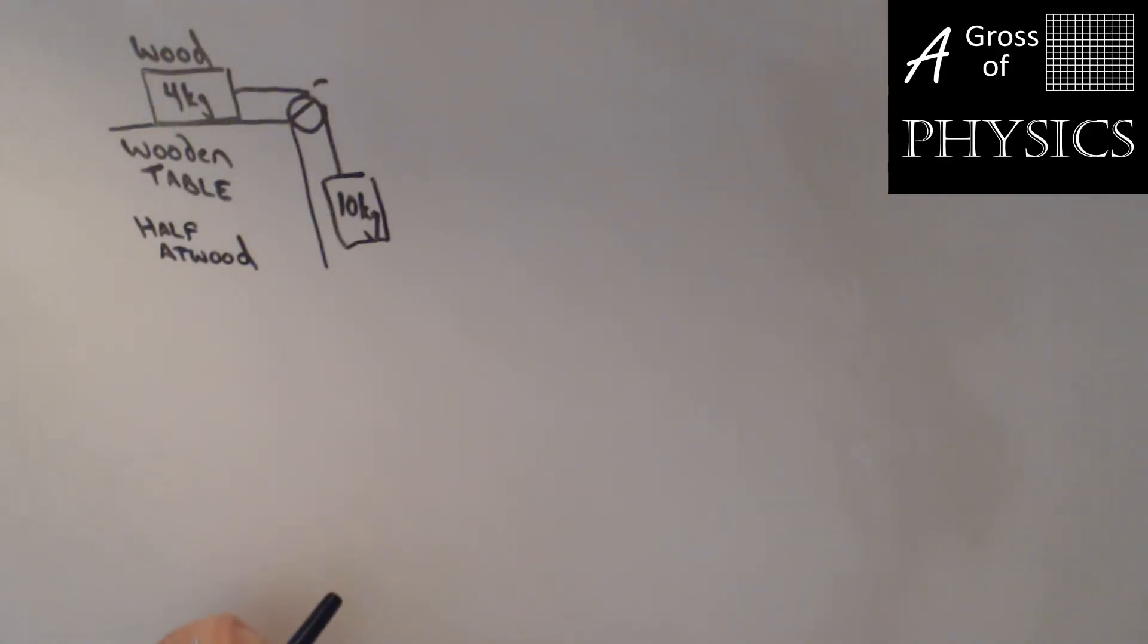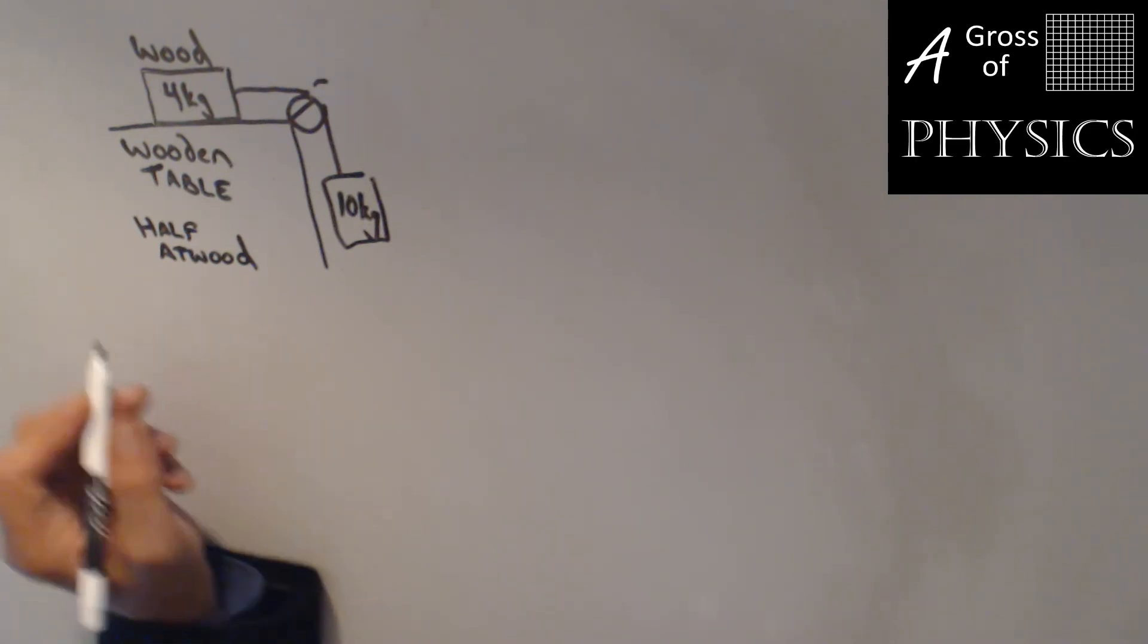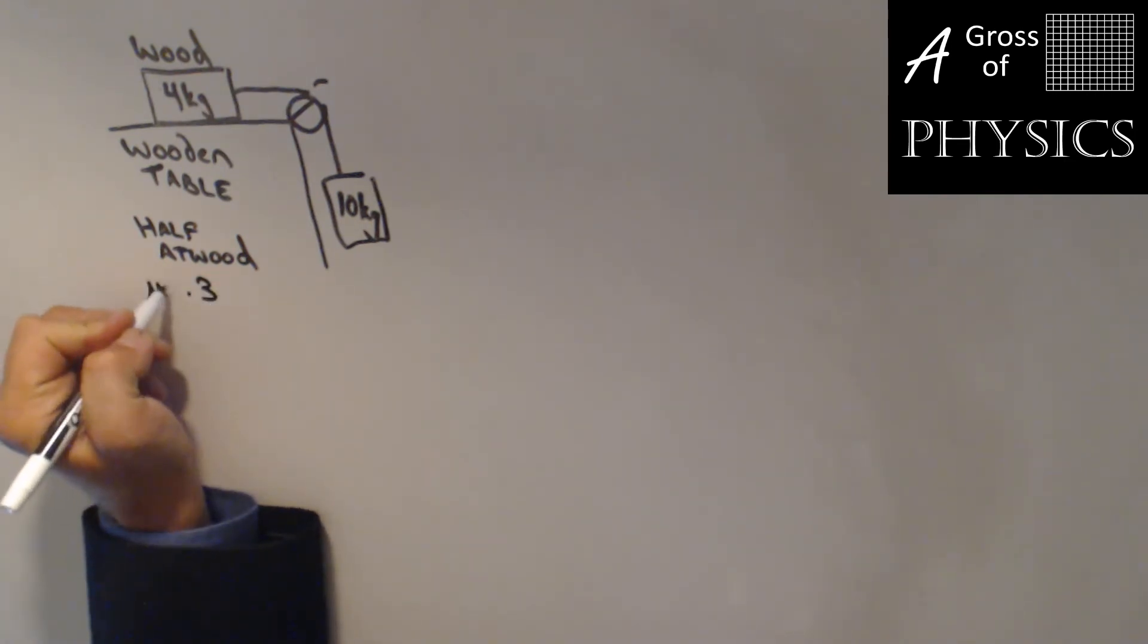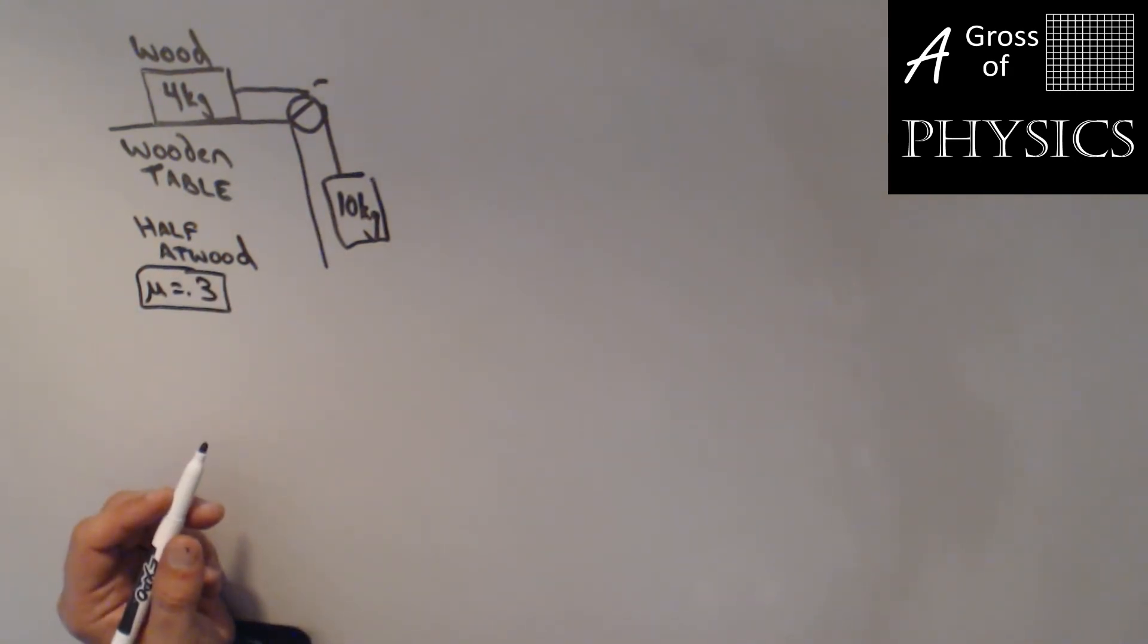Let's solve for a half Atwood's machine now with some friction. We have a piece of wood sliding on a wooden table. We need to look at our reference table to find the coefficient of friction. Wood on wood has 0.3 for kinetic and 0.42 for static. I'll write 0.3 for mu because this is going to be moving. We'll find the acceleration and tension in the rope again, but now we have friction involved.